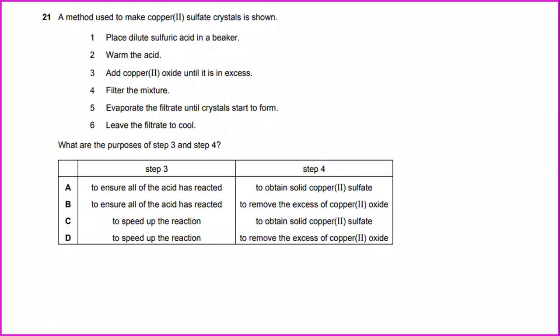A method used to make copper 2 sulfate crystal is shown where you have to place dilute sulfuric acid in a beaker, warm the acid, add copper 2 oxide until it is excess, filter the mixture, evaporate the filtrate until crystals start to form, leave the filtrate to cool. What are the purpose of step 3 and step 4?